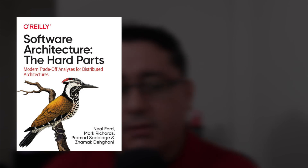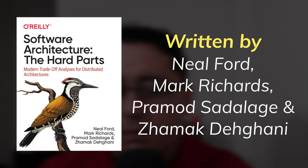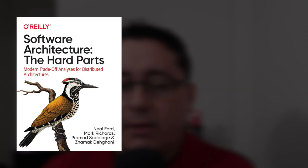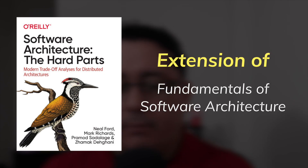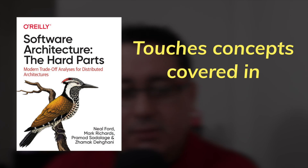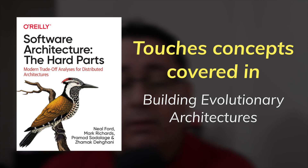Next we have Software Architecture: The Hard Parts — Modern Trade-off Analysis for Distributed Architectures, written by Neil Ford, Mark Richards, Pramod Sadalage, and Zhamak Dehghani. This book was published in November 2021 by O'Reilly and focuses more on the decisions we have to make and the trade-offs we have to consider when building software architectures. It is definitely an extension of Fundamentals of Software Architecture and touches concepts that also appear in Building Evolutionary Architectures, such as fitness functions, covers cohesion and coupling, modularity and decomposition, and much more, including concrete examples of the topics covered. It is a must-read for sure.